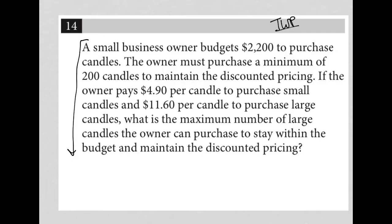So the first sentence here says, a small business owner budgets $2,200 to purchase candles. So I'm going to write that down. I'm going to just say C for candles is less than or equal to, right? So budgeting just means you can't spend more than that. So C is less than or equal to $2,200.